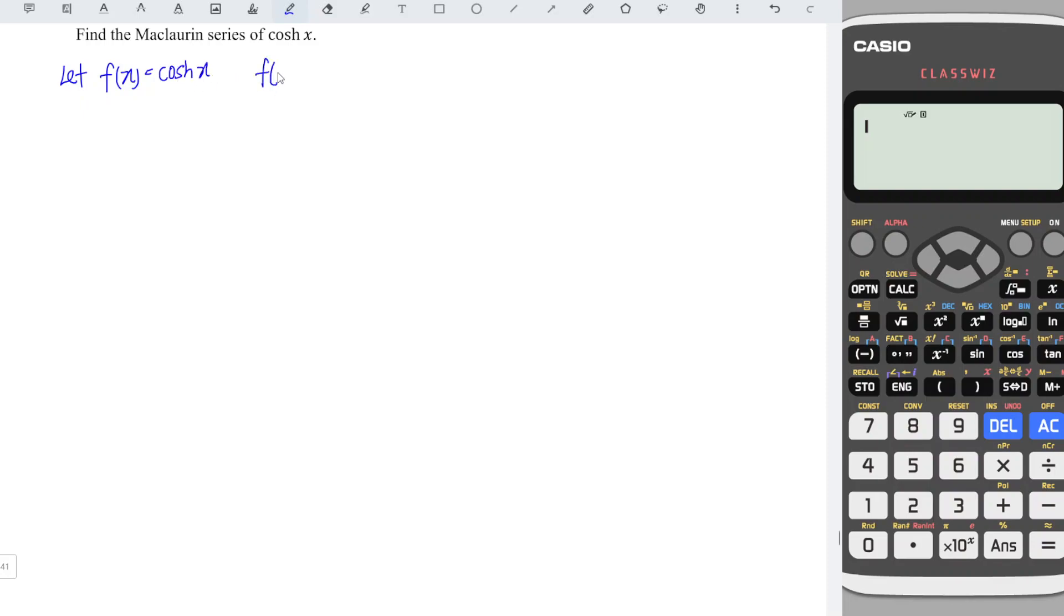At point x equal to 0, using a calculator, hyperbolic cosine 0, we should obtain 1.